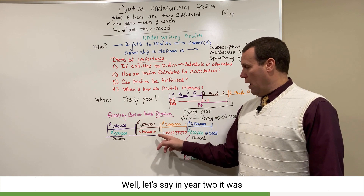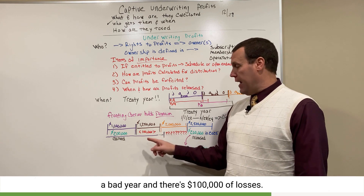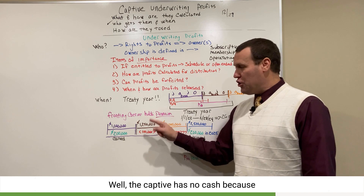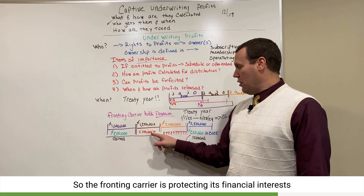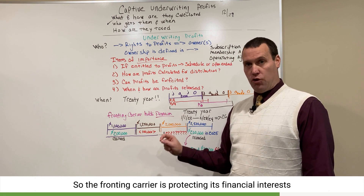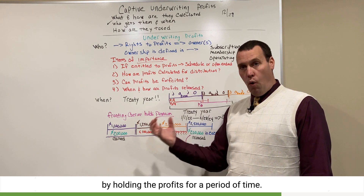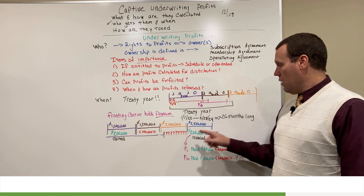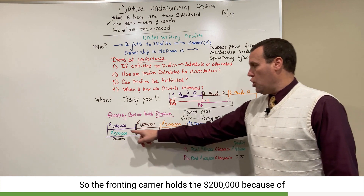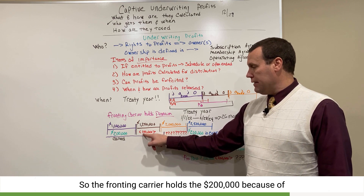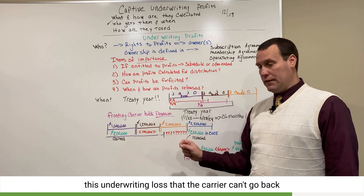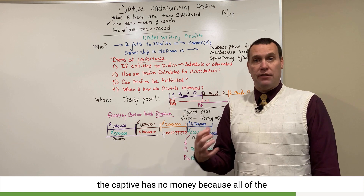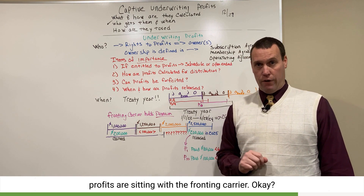Why is that? Let's say year two was a bad year and there's $100,000 of losses. The captive has no cash because the fronting carrier is holding the cash. So the fronting carrier is protecting its financial interests by holding the profits for a period of time. The fronting carrier holds the $200,000 because of this underwriting loss — the carrier can't go back to the captive and say 'give me $100,000' because the captive has no money; all of the profits are sitting with the fronting carrier.